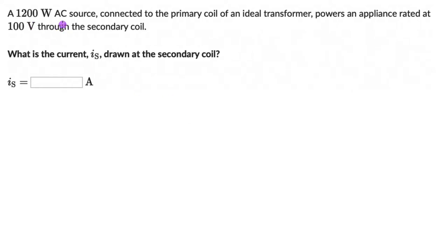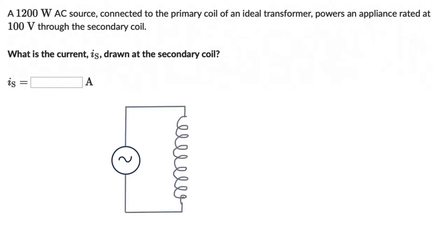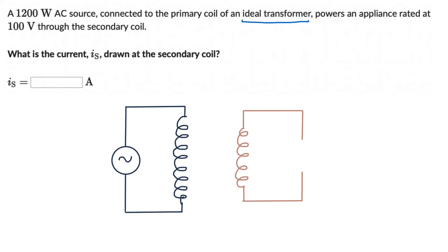Let's break down this question. We have a 1200W AC source connected to the primary coil of an ideal transformer. Here we have our secondary coil connected to an appliance, which we can represent by a resistance — every appliance has a resistance of its own. This appliance is rated at 100V, so we can write Vs = 100V.